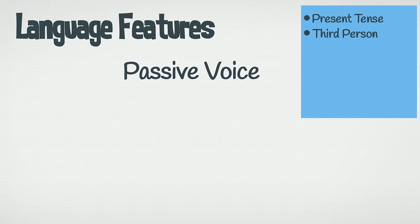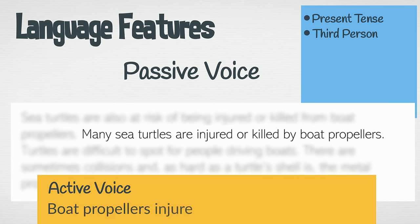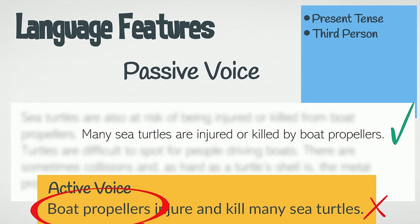Passive voice. Information reports should be written in passive voice. Take this example from a different part of the same report. It reads, many sea turtles are injured or killed by boat propellers. This is passive voice. I'll rewrite the same idea in active voice: boat propellers injure and kill many sea turtles. Can you see why passive voice must be used rather than active voice? In the active voice example, the emphasis is on the boat propellers. We want to always keep the focus on the topic of our report. In this case, sea turtles. Passive voice lets us do this.